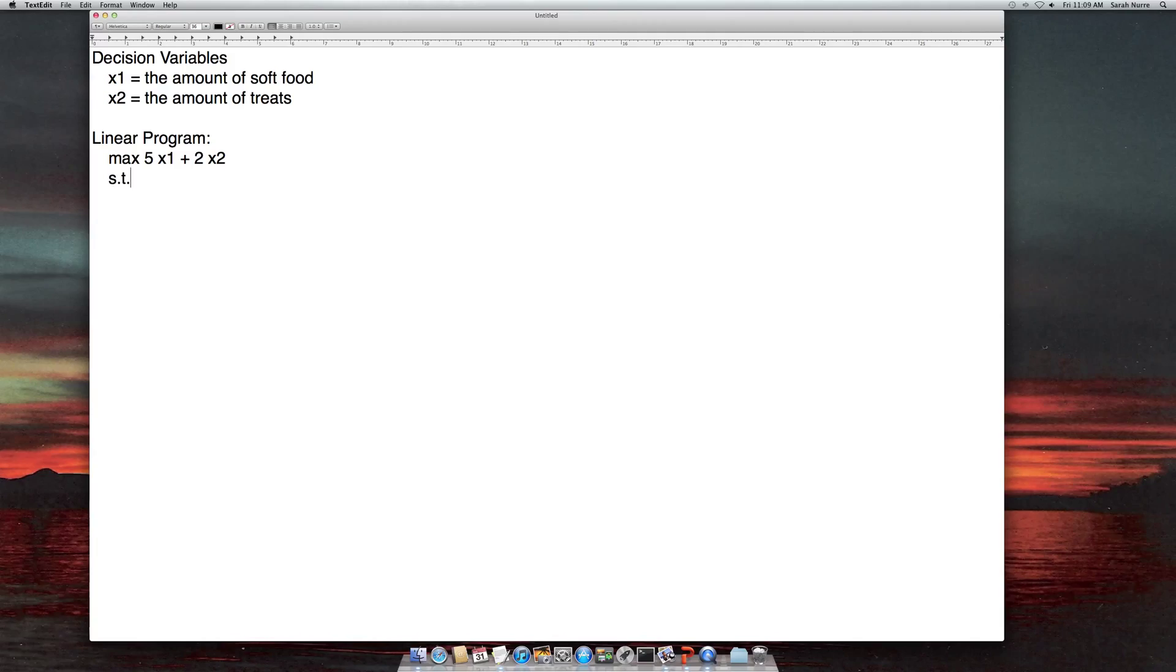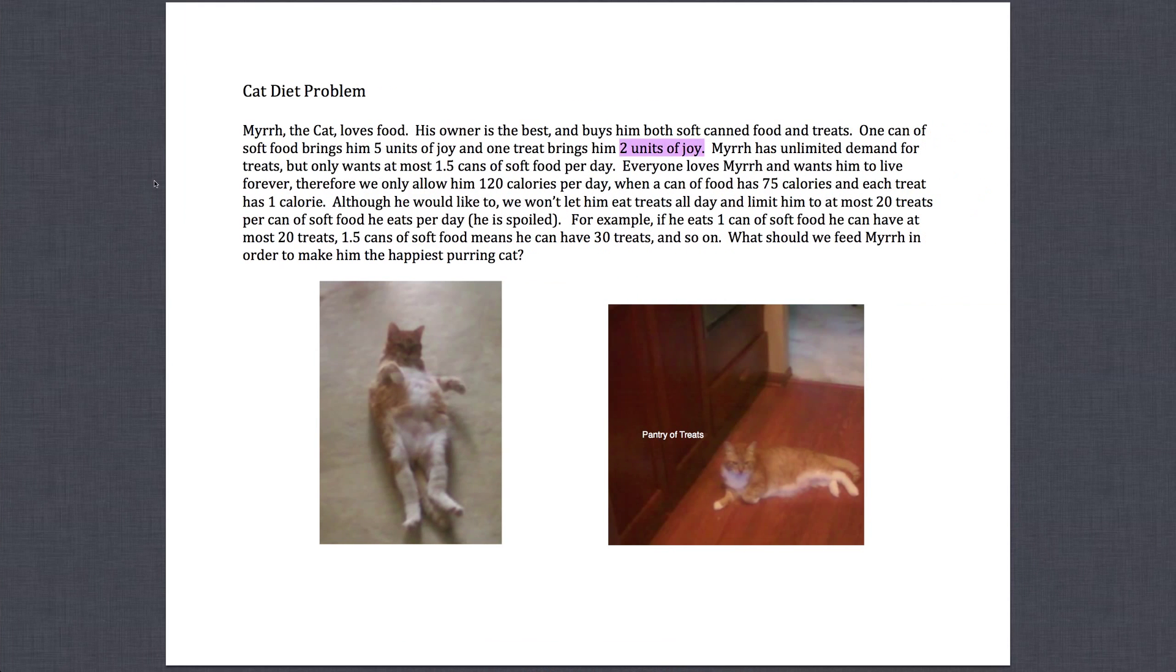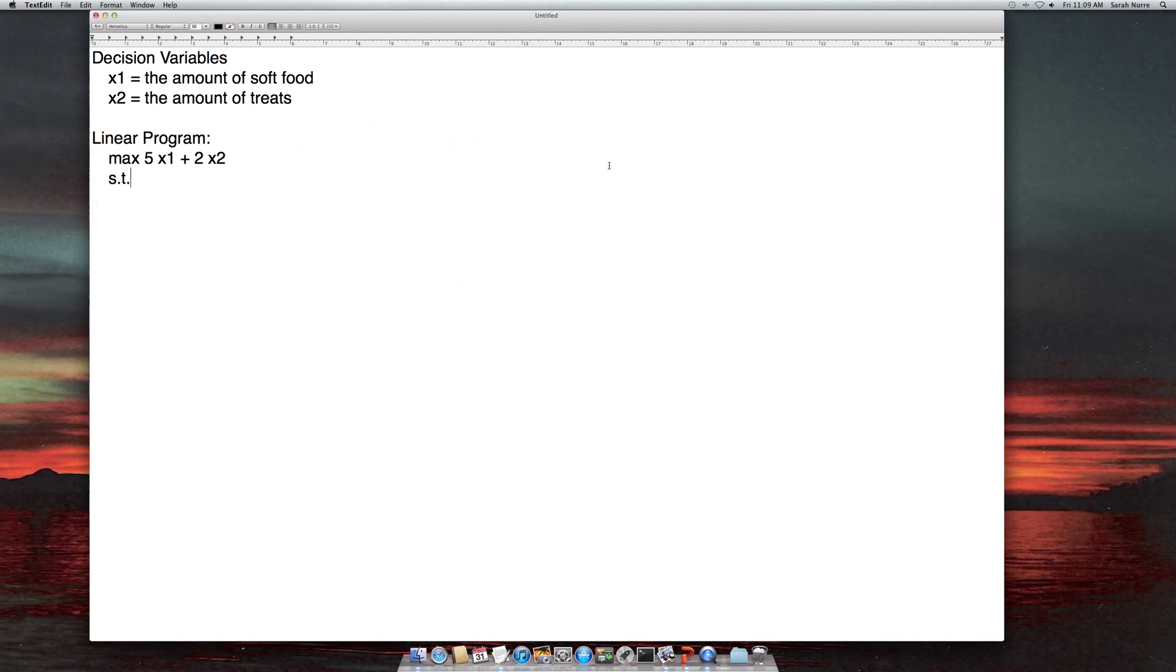Then we want to add constraints. Therefore we have a subject to. And let's go through this line by line. So Murr has unlimited demand for treats, we don't need to do that. Essentially we're just saying that x2 is bounded by infinity. Next we say he only wants at most 1.5 cans of soft food per day. So we're limiting, strictly limiting the amount of soft food he can have. So soft food is x1. We're then going to say x1 here is less than or equal to 1.5. So that's our first constraint.